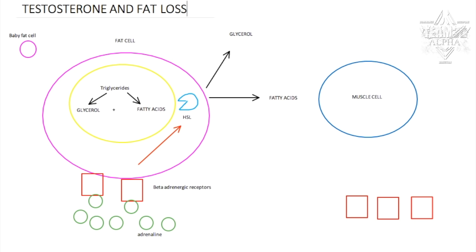So testosterone has so many fat burning effects: increasing these receptors, stopping baby fat cells from becoming big fat cells, and turning them into satellite cells which lead to bigger muscles. You know bigger muscles mean more oxidation or burning of fatty acids, along with the other benefits of having big muscles. Trying to keep this video short.